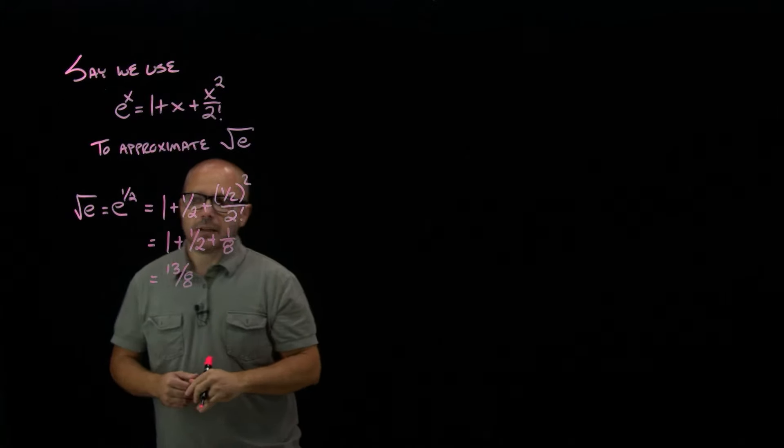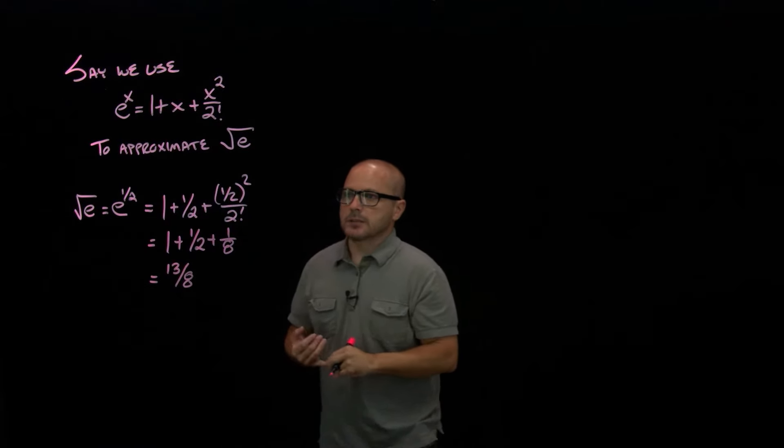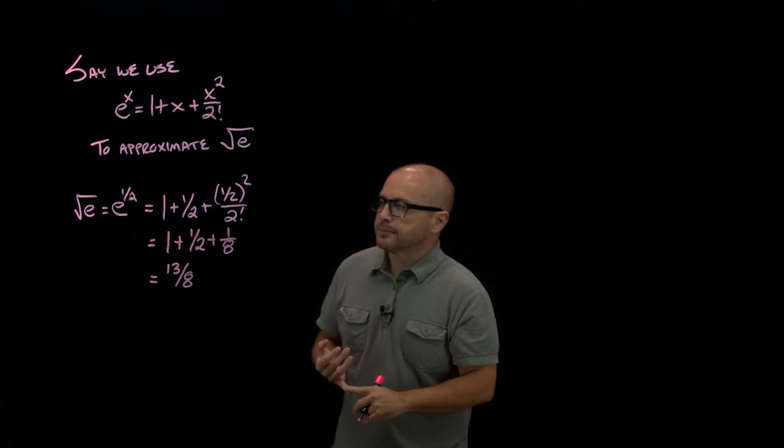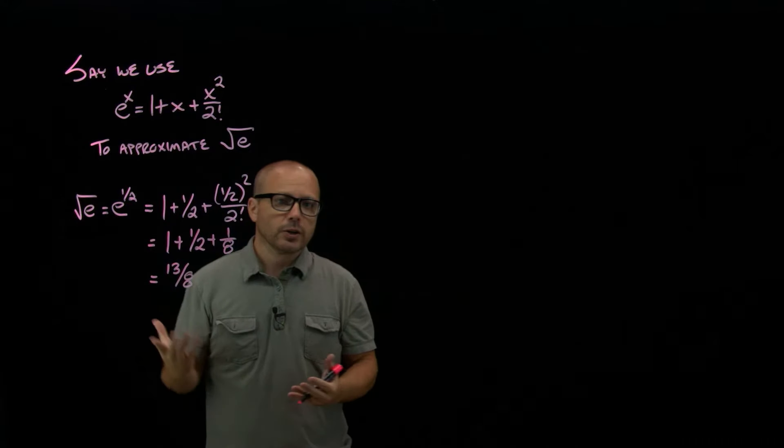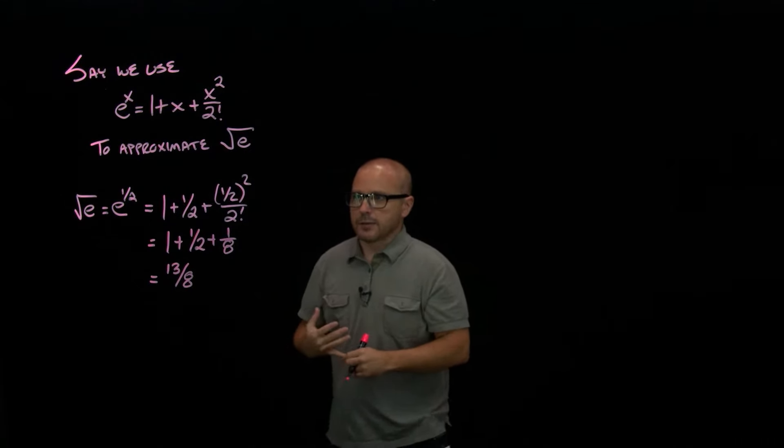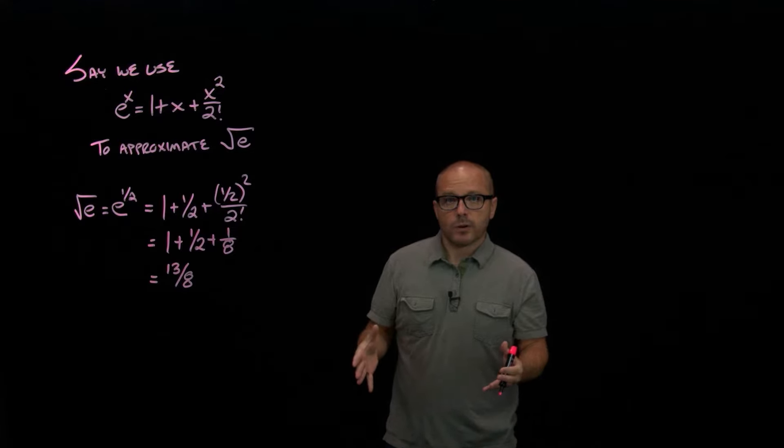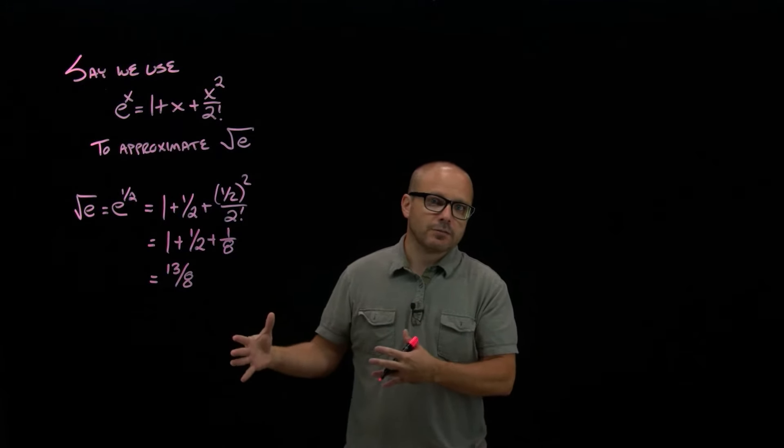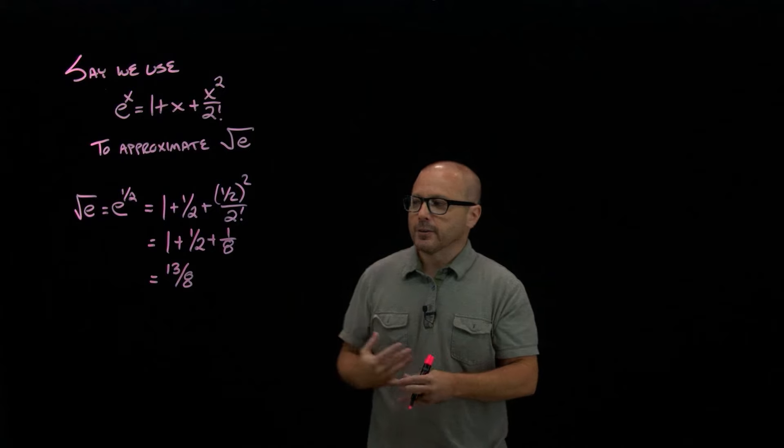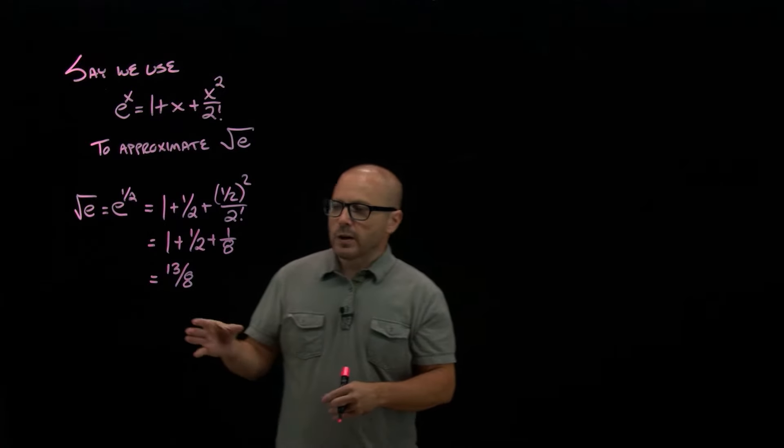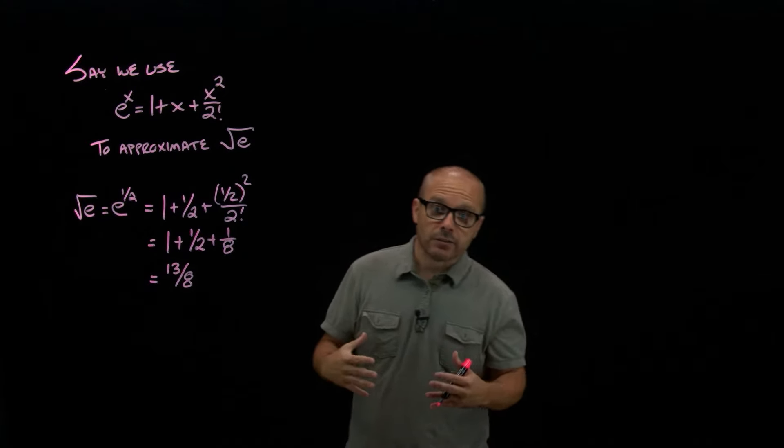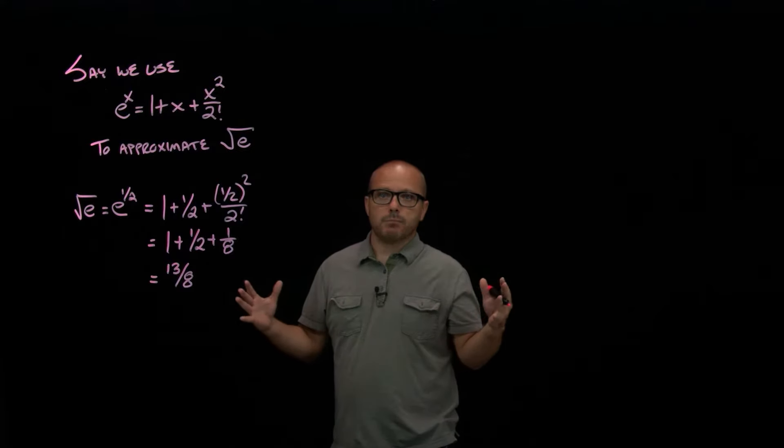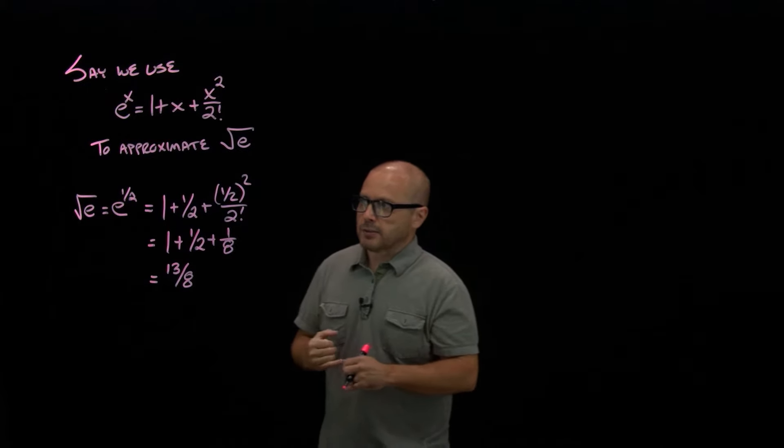The question then is, okay, there's an approximation of square root of e. How good is it? How far is that from the exact? Well, obviously, we won't know. Because if we knew how far it was from the exact, we could figure out the exact. And then there's no error. So we want to use Taylor's theorem to put some upper bound. We want to know that we're not bigger than some amount of error.